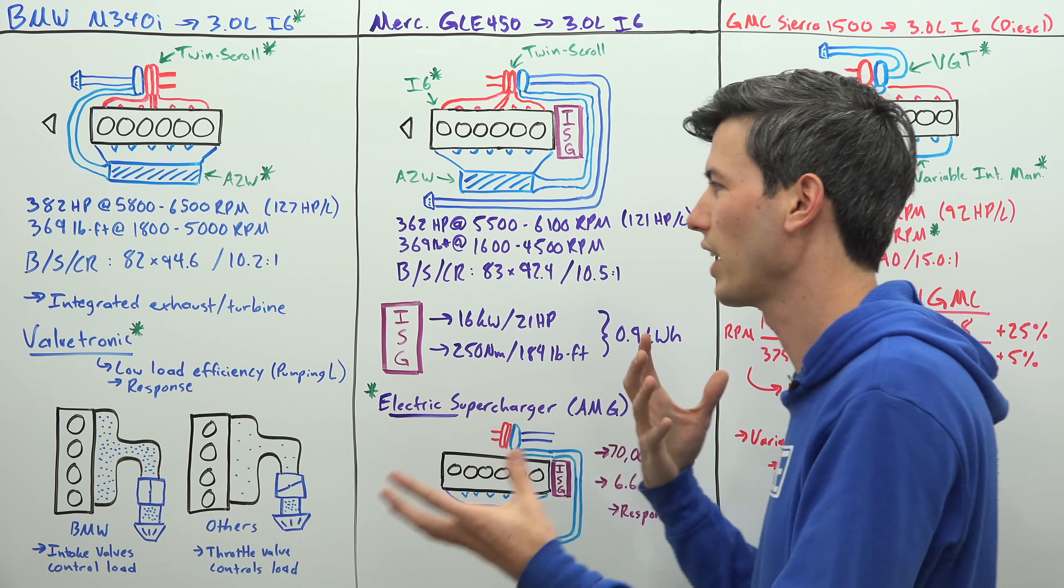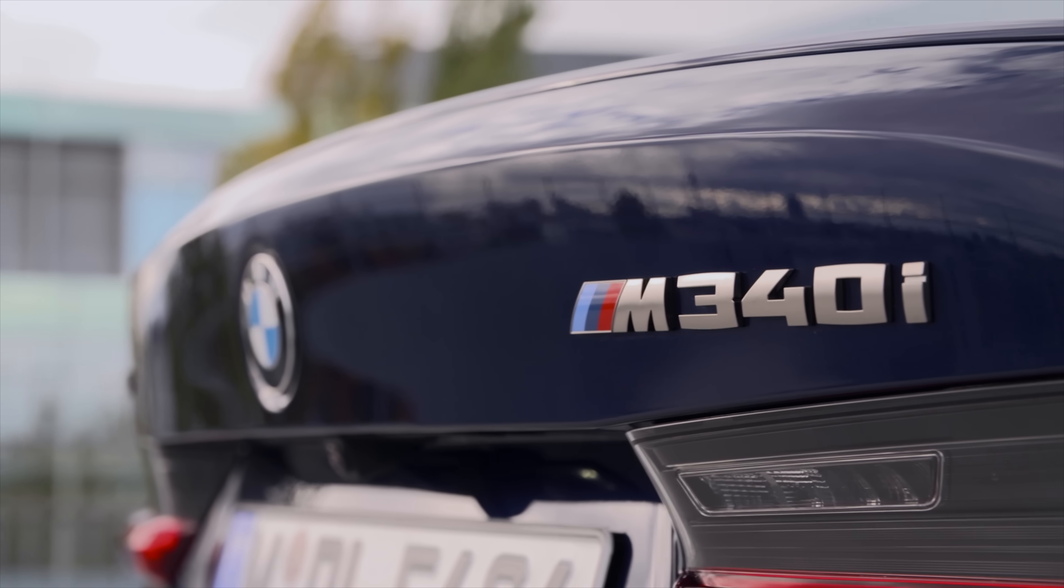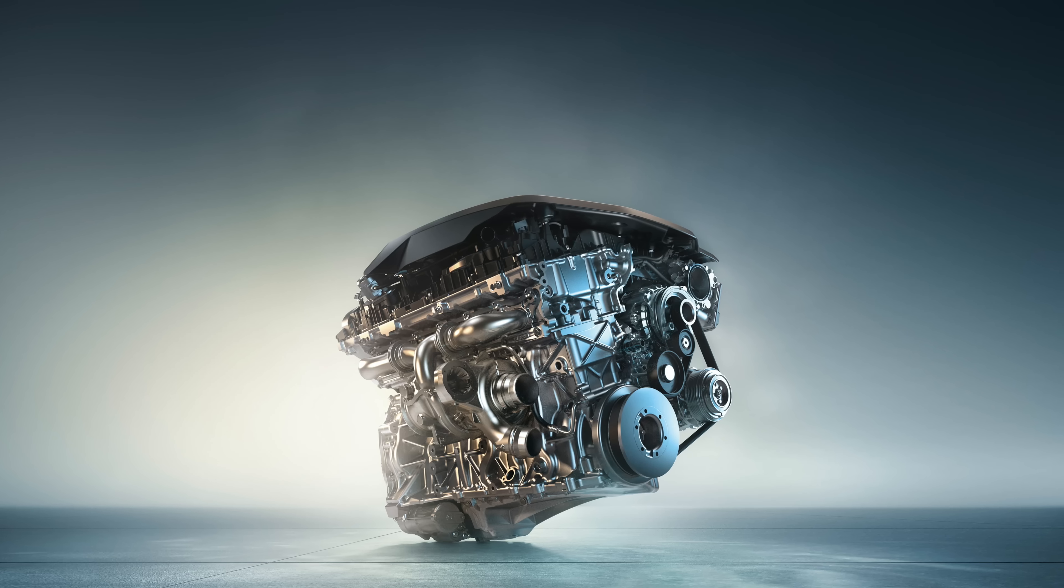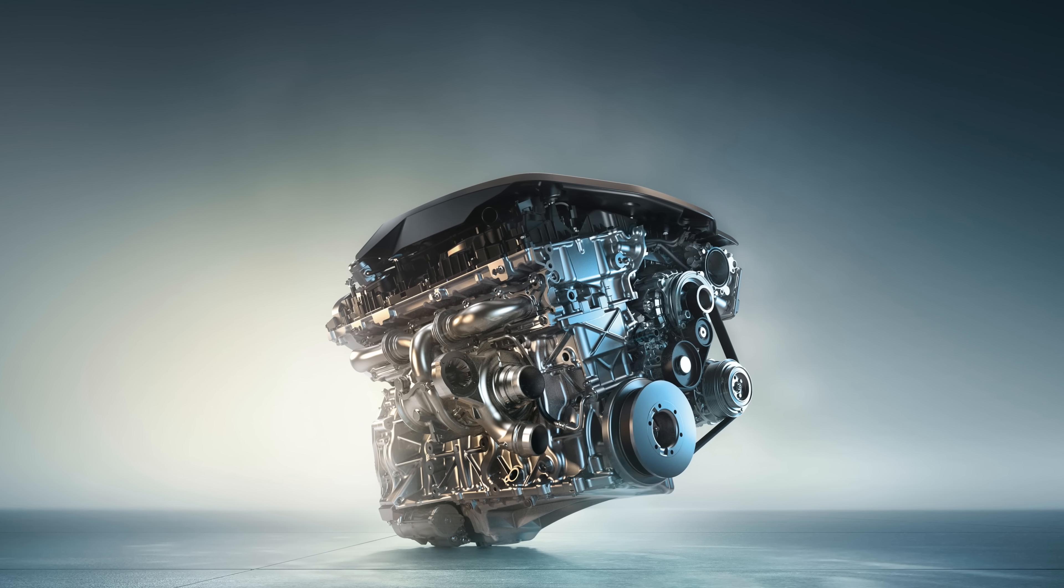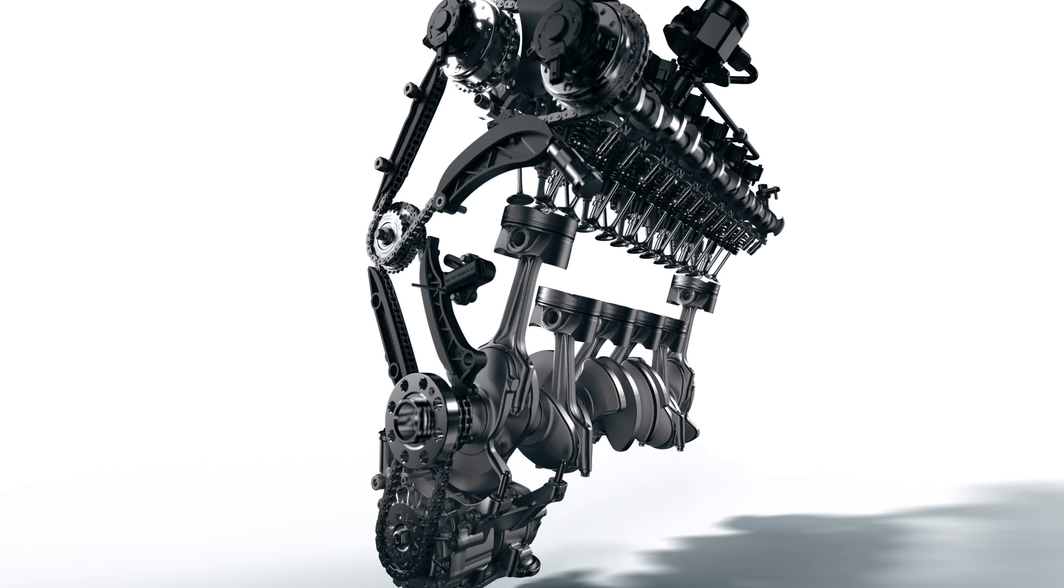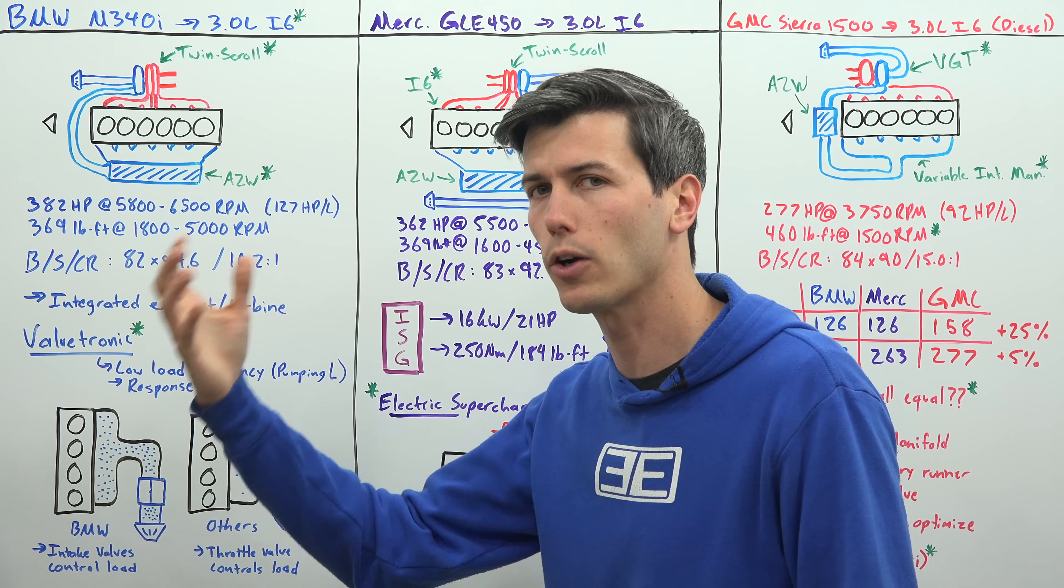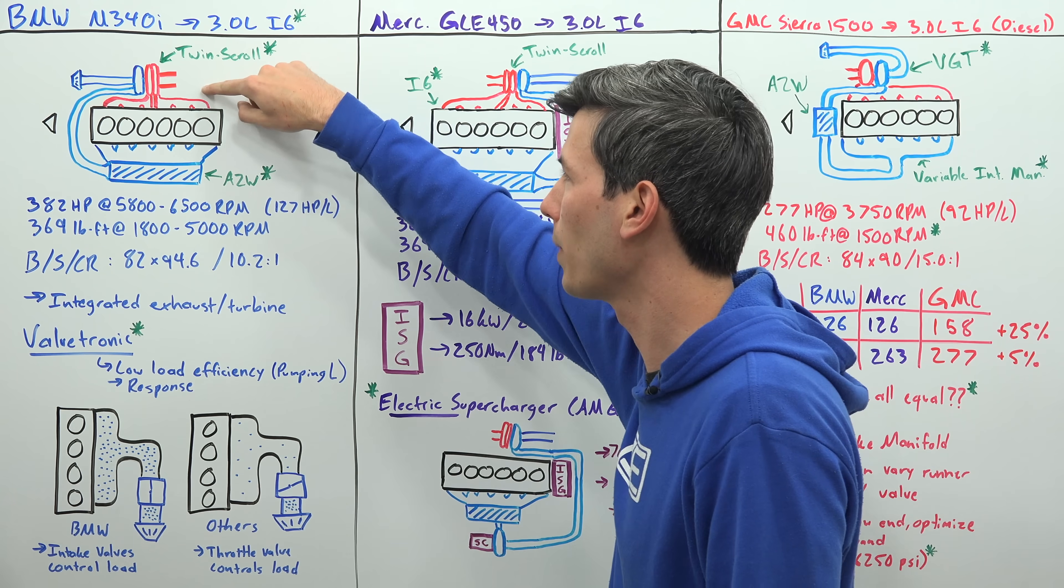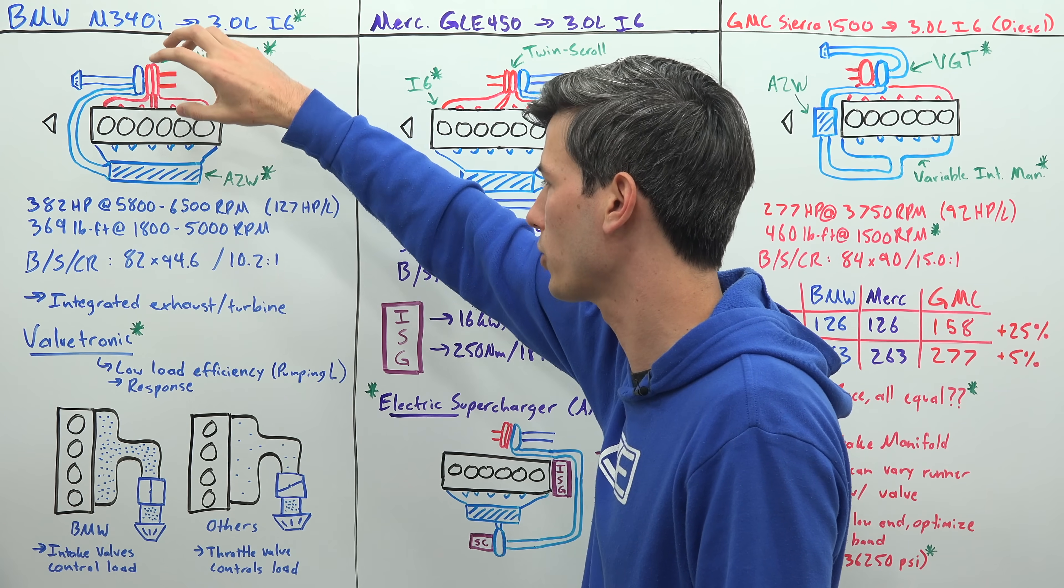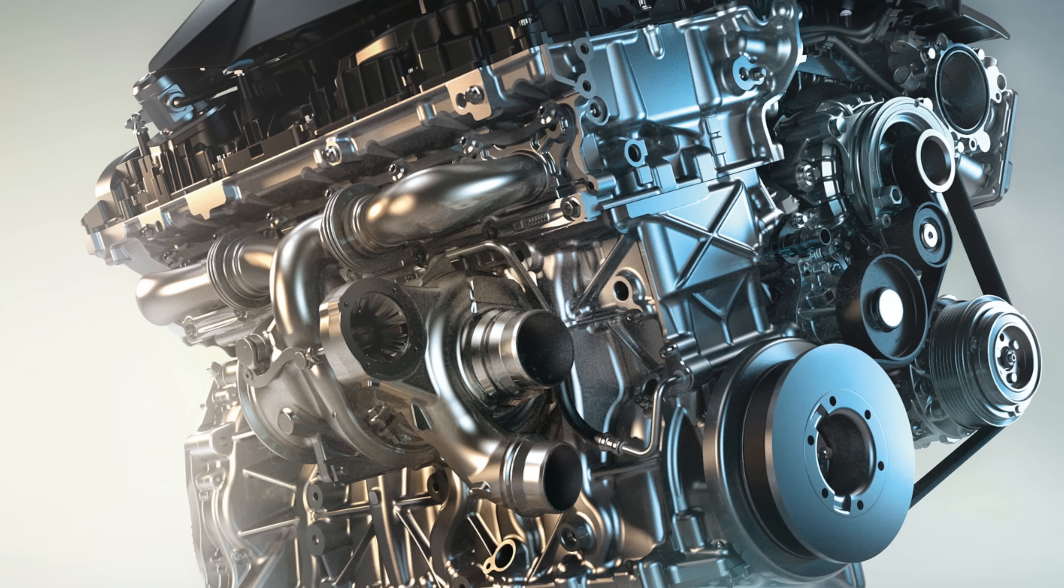I've also listed some interesting features about each of these engines that kind of makes them unique. One of the interesting features of this BMW engine, and this is the same engine basically that's used in the BMW Z4, it's a variant of the engine used in the Toyota Supra, is the fact that it has an integrated exhaust and turbine housing. So the exhaust manifold and the turbine housing of the turbocharger are actually all one piece. If you were to swap out the turbo you'd be swapping out the exhaust and that turbocharger.